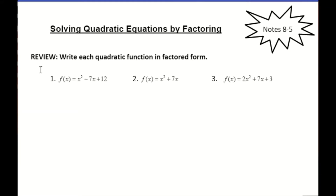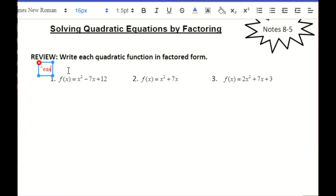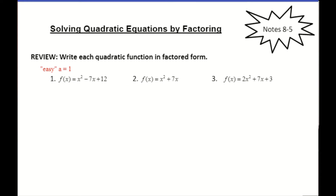The first category is what I like to call the easy ones, and that is when you have your a value equal to one. Notice that the leading term — the x squared — doesn't really have a visible coefficient. Whenever there's no number in front of your variable, the coefficient is assumed to be one.